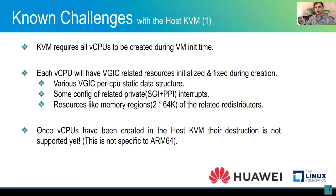Once VCPUs have been created in the host KVM, their destruction is not supported yet. This is not ARM64-specific — the Intel architecture has the same limitation in KVM, but there are workarounds for that. So it's not a big challenge as people have already solved this part. The MPIDR uniquely identifies a VCPU in the system. For the virtual world, this value is currently derived and set by KVM. Ideally, it should be the responsibility of user space rather than KVM.